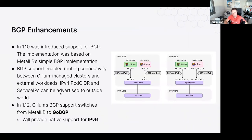BGP enhancements: BGP has been supported for several releases. In 1.12, we've added full IPv6 support and changed the underlying mechanics of the BGP implementation to support additional BGP control planes. We no longer depend solely on the MetalLB implementation — we can move to GoBGP, which has additional functionality including IPv6. This also makes the system more pluggable and modular, supporting additional BGP implementations if required.